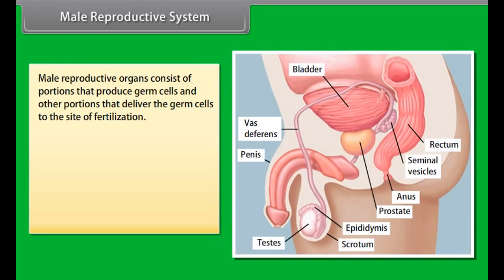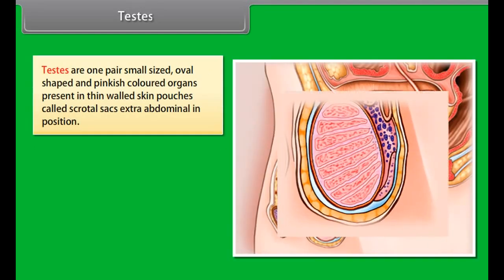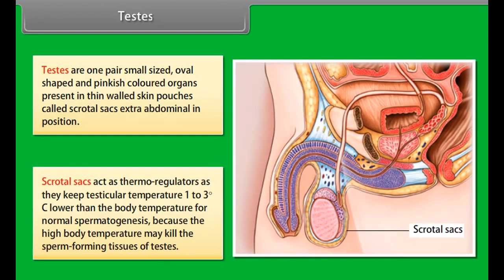Male reproductive organs consist of portions that produce germ cells and other portions that deliver the germ cells to the site of fertilization. The human male reproductive organs are testes, epididymis, vas deferens, urethra, and penis. Testes are one pair, small-sized, oval-shaped, and pinkish-colored organs present in thin-walled skin pouches called scrotal sacs, extra-abdominal in position. Scrotal sacs act as thermoregulators, keeping testicular temperature 1 to 3 degrees Celsius lower than body temperature for normal spermatogenesis, as high body temperature may kill the sperm-forming tissues.